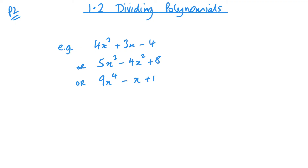Polynomials have to have positive powers. Things that are fractional powers — like a square root of something, a cube root of something, or things where the x is on the bottom giving a negative power — these things are not polynomials. It's important to understand the difference.